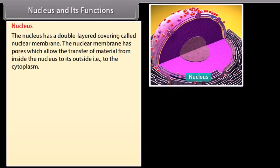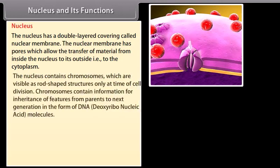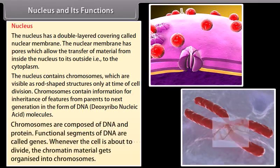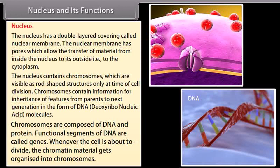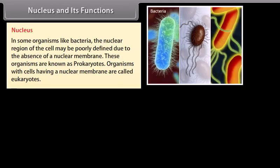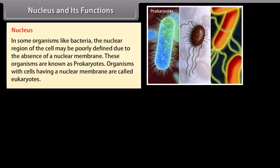Nucleus and its functions: the nucleus has a double-layered covering called the nuclear membrane. The nuclear membrane has pores which allow the transfer of material from inside the nucleus to the cytoplasm. The nucleus contains chromosomes, which are visible as rod-shaped structures only at the time of cell division. Chromosomes contain information for inheritance of features from parents to the next generation in the form of DNA — deoxyribonucleic acid. Chromosomes are composed of DNA and protein; functional segments of DNA are called genes. In some organisms like bacteria, the nuclear region may be poorly defined due to the absence of a nuclear membrane — these organisms are known as prokaryotes.